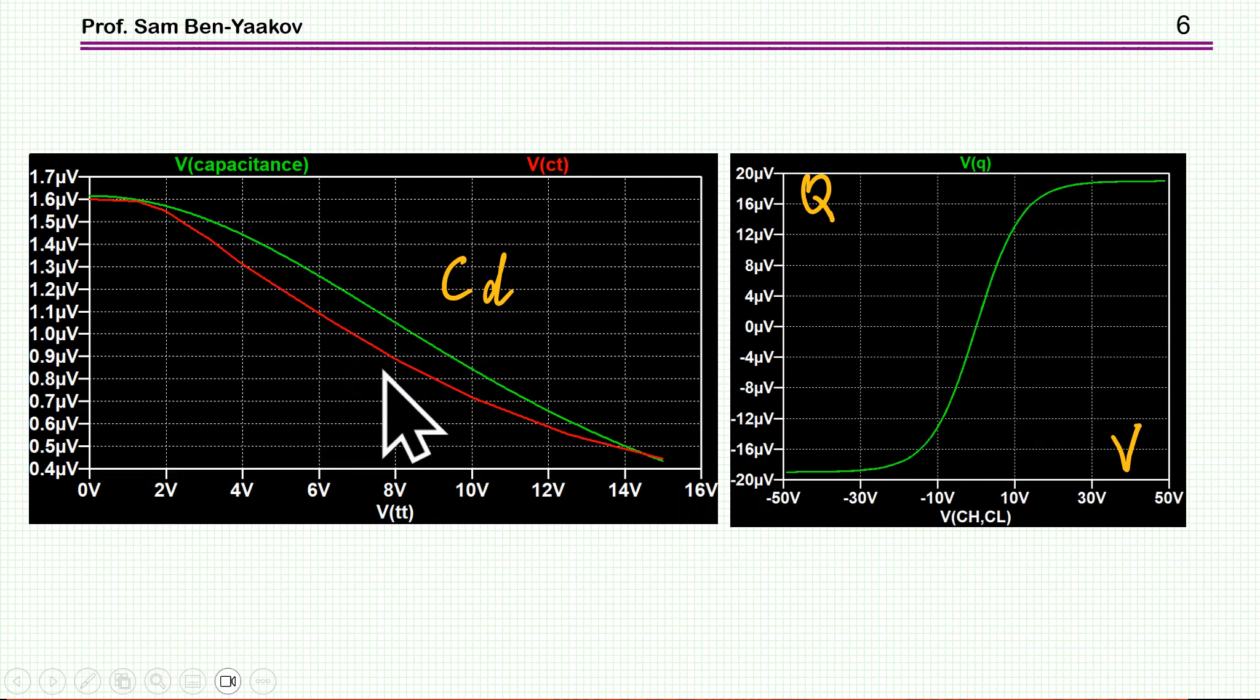Once we have this, we can now go back to the basics of the QV curve, similar to the BH in the inductance. So we see that for this particular capacitor, the saturation is at about, within the accuracy of this fitting, say, something below 20 microcoulomb, this will be microcoulomb, and this is the zero, and it's symmetrical to the two sides.